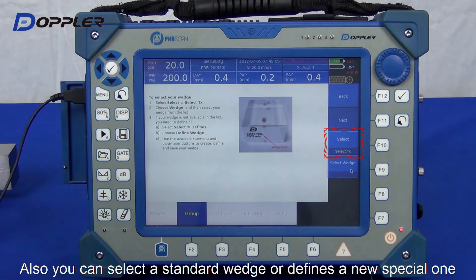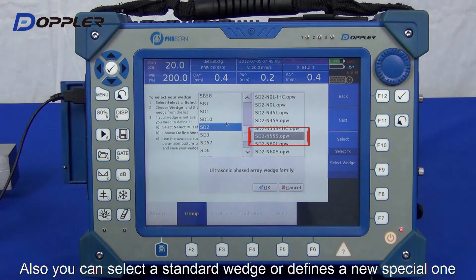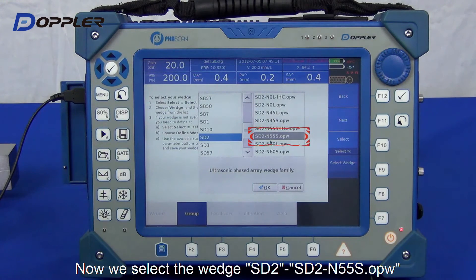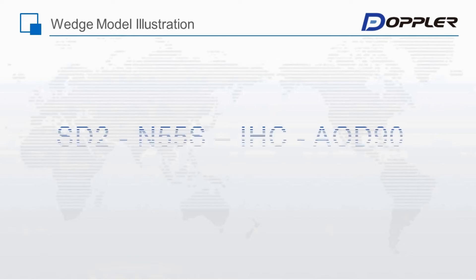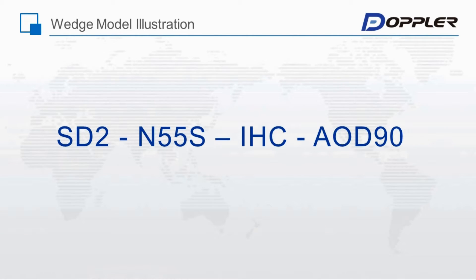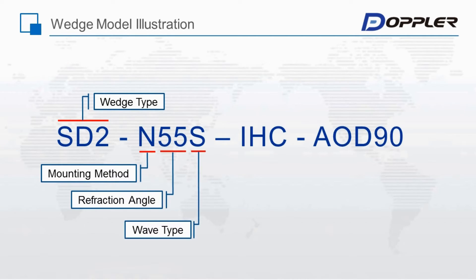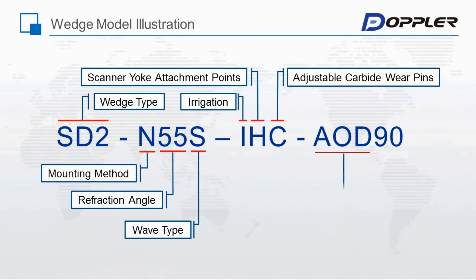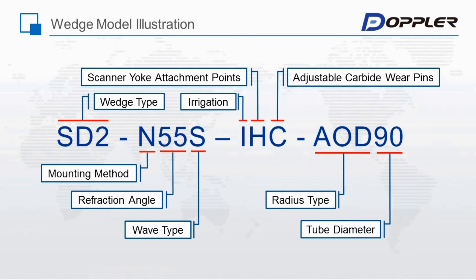Next, wedge selection — let's find out which one we are using. Here is a specification of the Doppler wedge model name. This specification will be attached in every Doppler wedge retail package.